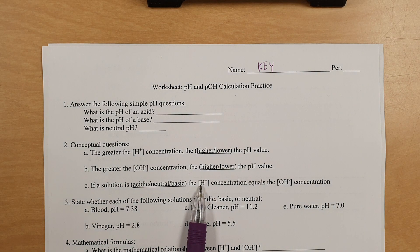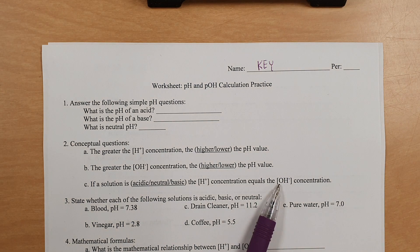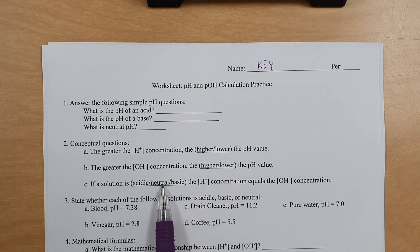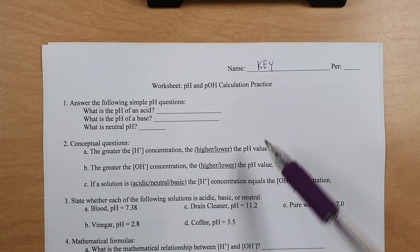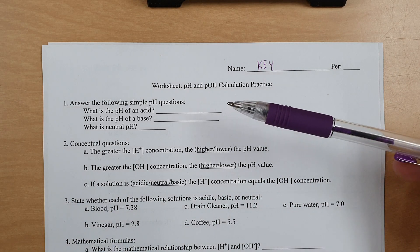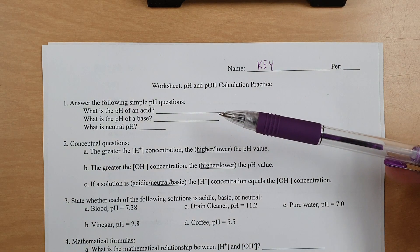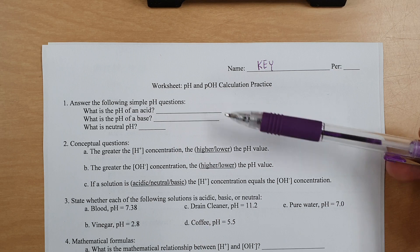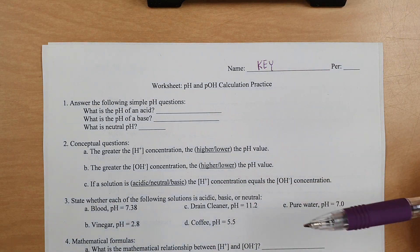If the acidic portion, the hydrogen, is equal to the basic portion, the hydroxide, if they're equal, then you have a neutral solution. So keep in mind, any pH above 7 is basic, any pH below 7 is an acid, any pH that is 7 is neutral. That'll help you answer this.